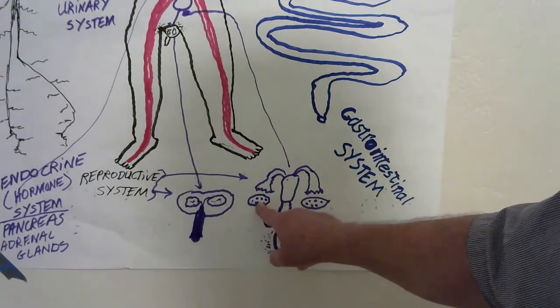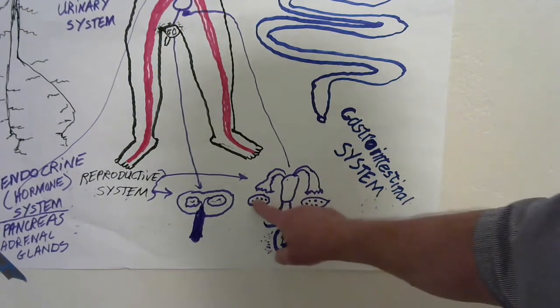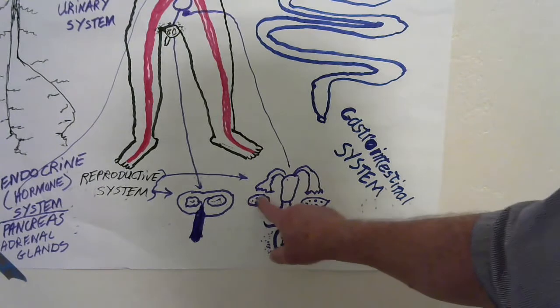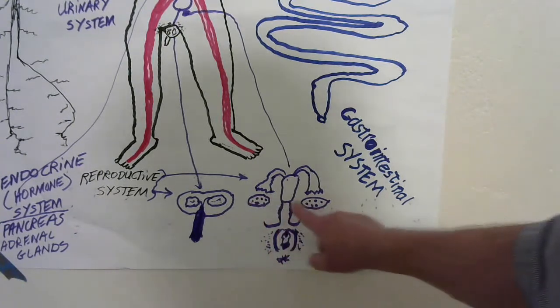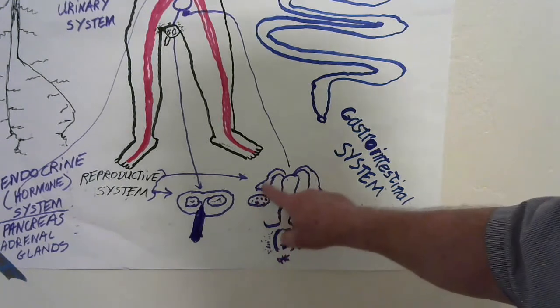The female gonads are called ovaries, and they secrete estrogen, the female hormone. The ovaries contain eggs that can become people.